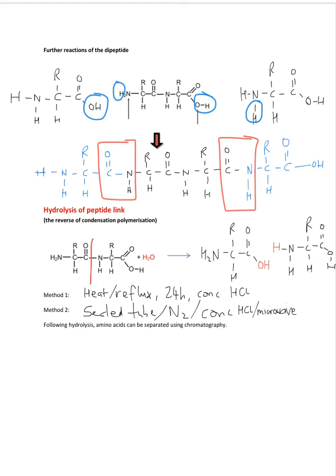There are two conditions. You can have very harsh, slow conditions: heat under reflux, 24 hours of refluxing and concentrated HCl, 6 molar. Or you can use a quicker method: 30 minutes, sealed tube with nitrogen, concentrated HCl, and you can actually heat that in a microwave, and it would do the same thing. The purpose of that will be to analyze the amino acids present, as you could analyze through chromatography, which is something else you'll learn about later in this course.